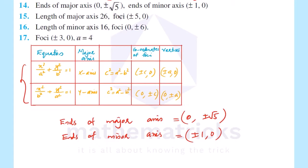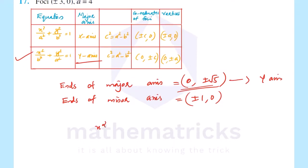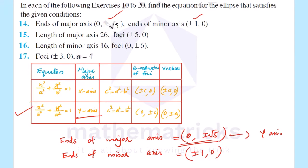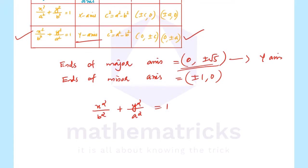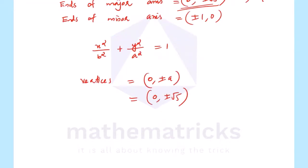Now we determine the equation of the ellipse. The vertices are (0, ±a). Since the vertices are (0, ±√5), this shows that x = 0, meaning the major axis is along the y-axis, and a = √5.